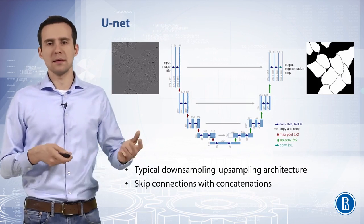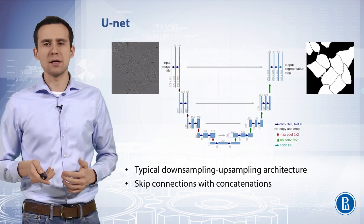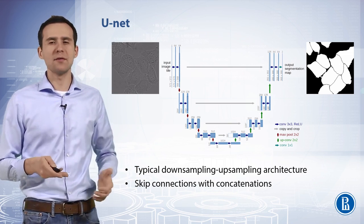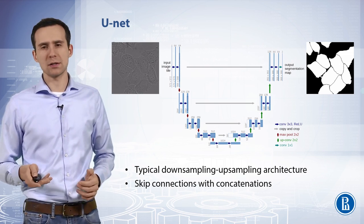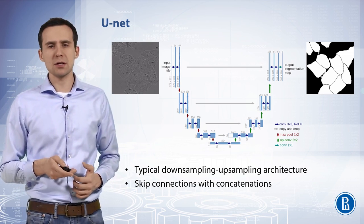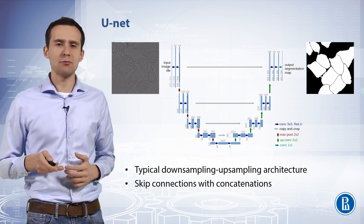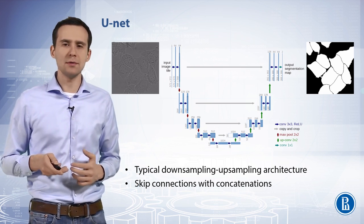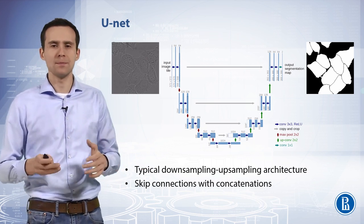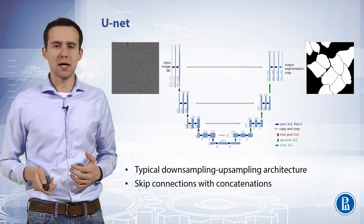U-Net is yet another model with a downsampling-upsampling architecture. The downsampling part follows the typical architecture of a convolutional network. It consists of the repeated application of two 3×3 unpadded convolutions followed by a rectified linear unit and a 2×2 max pooling operation with stride 2 for downsampling. At each downsampling step, we double the number of feature channels.